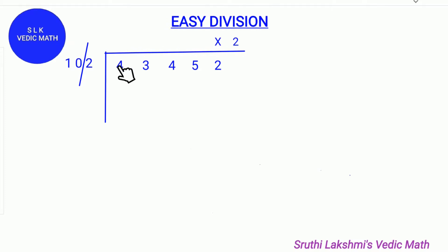To divide 43452 by 102, first put a slash separating the last digit 2. Then we multiply 2 with the last digit of the quotient and divide it by 10. Isn't it easy to divide by 10 instead of 102? We do not need to remember the 102 tables!